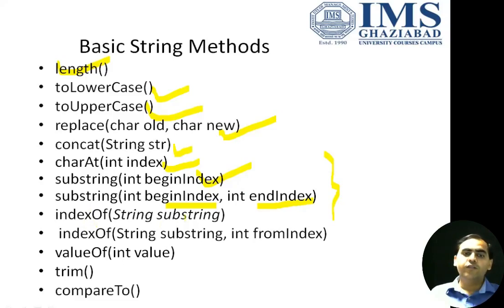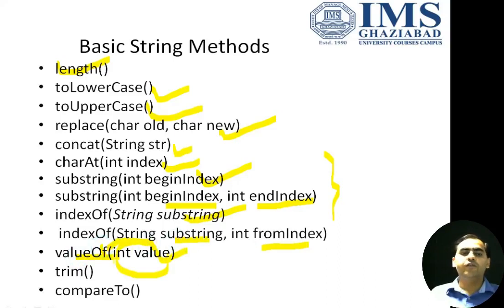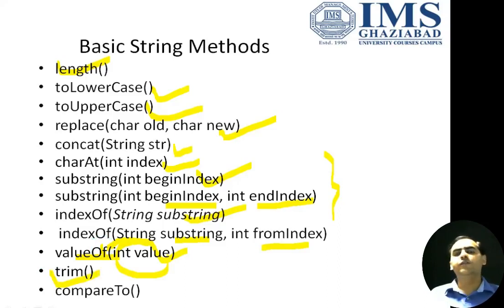The indexOf method finds the index of any substring. If you want to search starting from a particular index, use indexOf(substring, fromIndex). The valueOf method converts any given value into string form — for example, an integer can be converted to a string using valueOf. The trim method removes all white spaces from the beginning and end of a string.